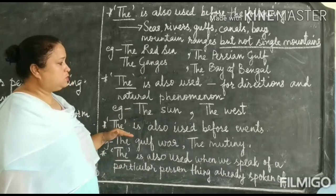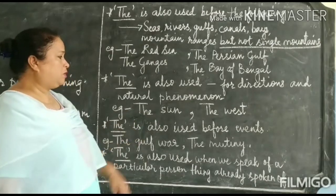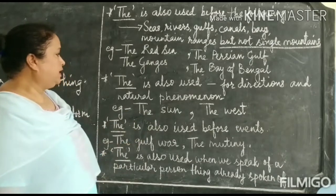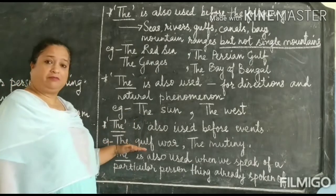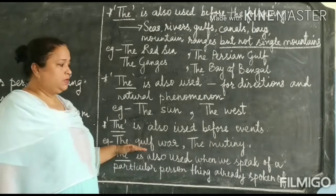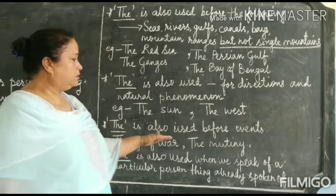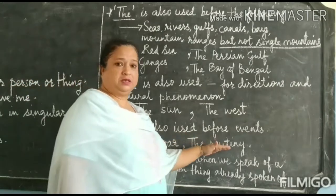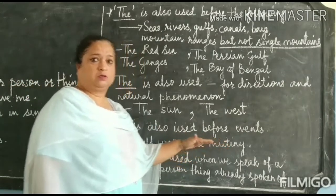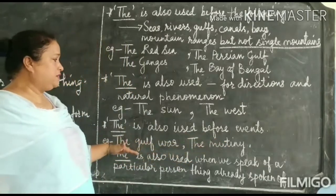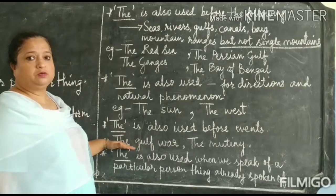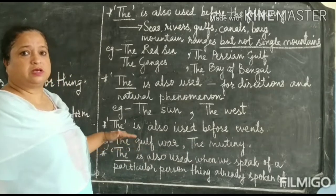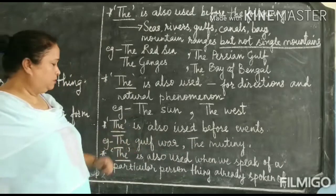'The' is also used when we talk about historical events. For example: the Gulf War, the Mutiny. These are events, and in front of events what do we use? We use the article 'the'.